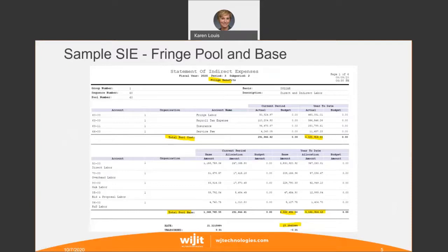Here's a sample of a statement of indirects. This is the statement of indirects for fringe — you can see fringe benefits here. This is typically what the statement of indirects looks like; this is just the fringe pool. On the top, you have the pool costs — total pool costs for the current period and then year-to-date. We're monitoring and looking at our rates on a year-to-date basis, so the year-to-date amount of $1,101,914 is highlighted because this is what we're really interested in.